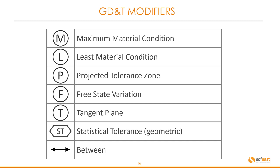Let's have a look at the GD&T modifiers. M is maximum material condition. L is least material condition. P is projected tolerance zone. F is free state variation. T is a tangent plane. ST is statistical tolerance, geometric. And the arrows symbol means between.